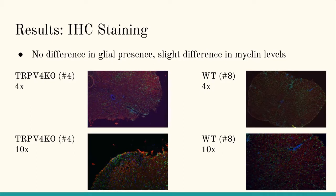In my immunohistochemistry staining, there's no real difference in glial presence or activation between the two groups, as you can see on the screen. Both the left and right groups of tissue staining still show those green dots — the glial cells. However, the tissue on the left, the knockout mice — the mice that don't have TRP-V4 — has slightly higher levels of background red, which indicates that there might be more myelin in the tissue. Conversely, when TRP-V4 is present, there is less myelin.